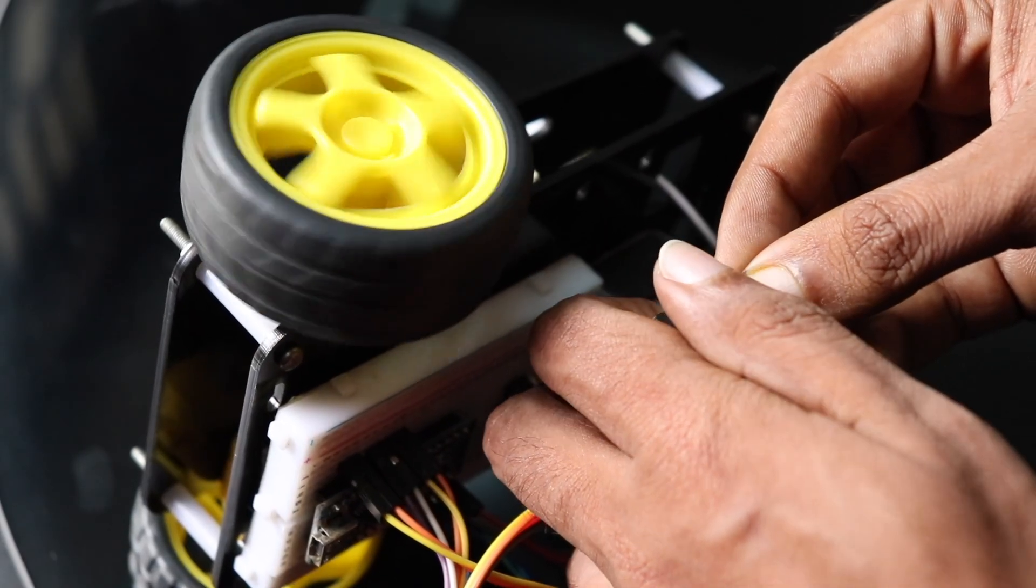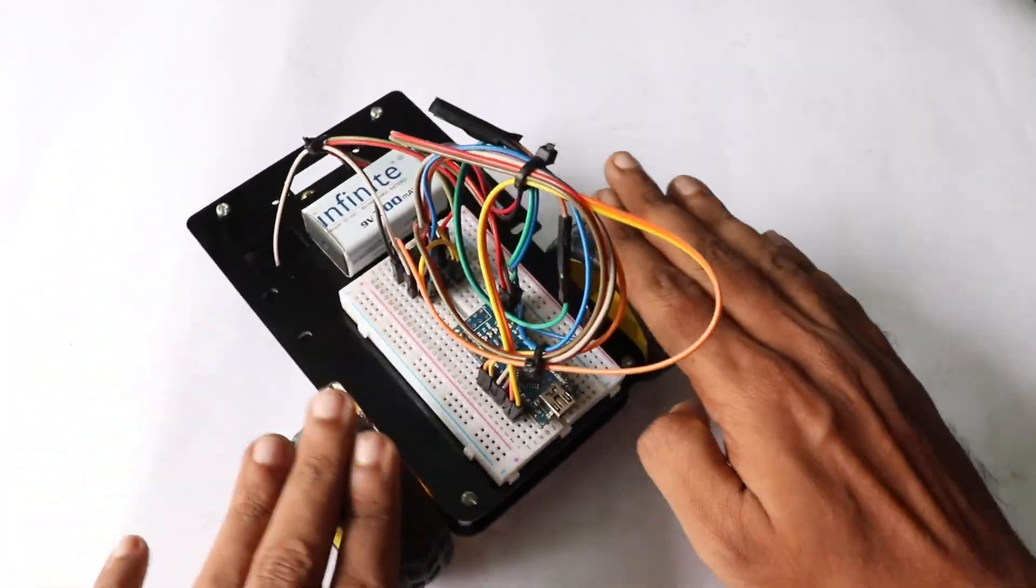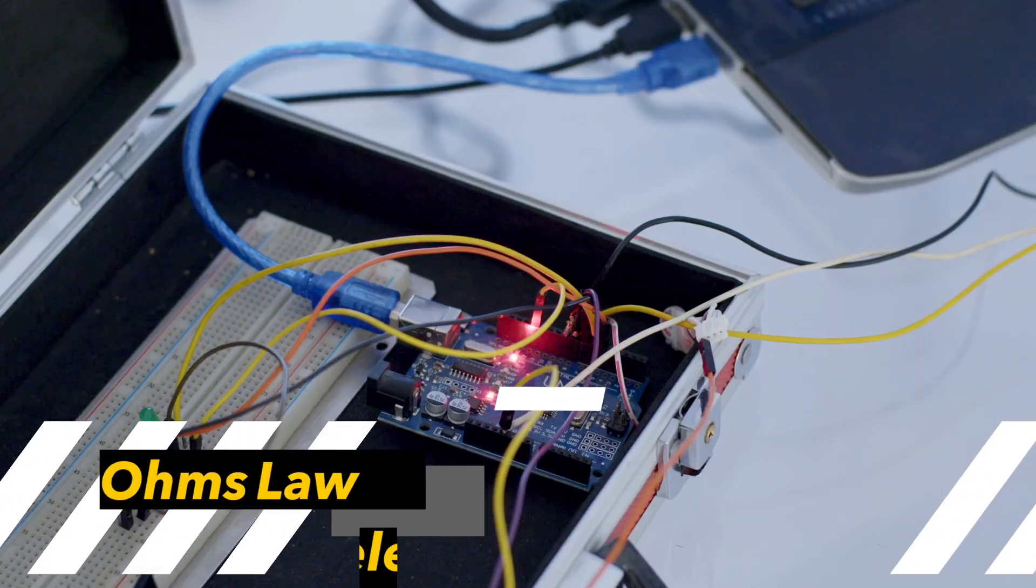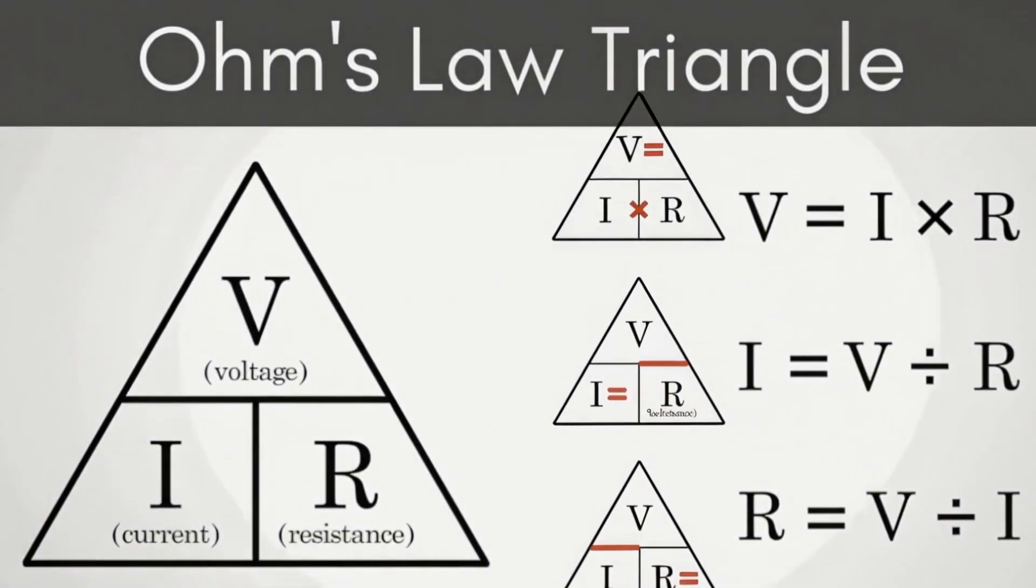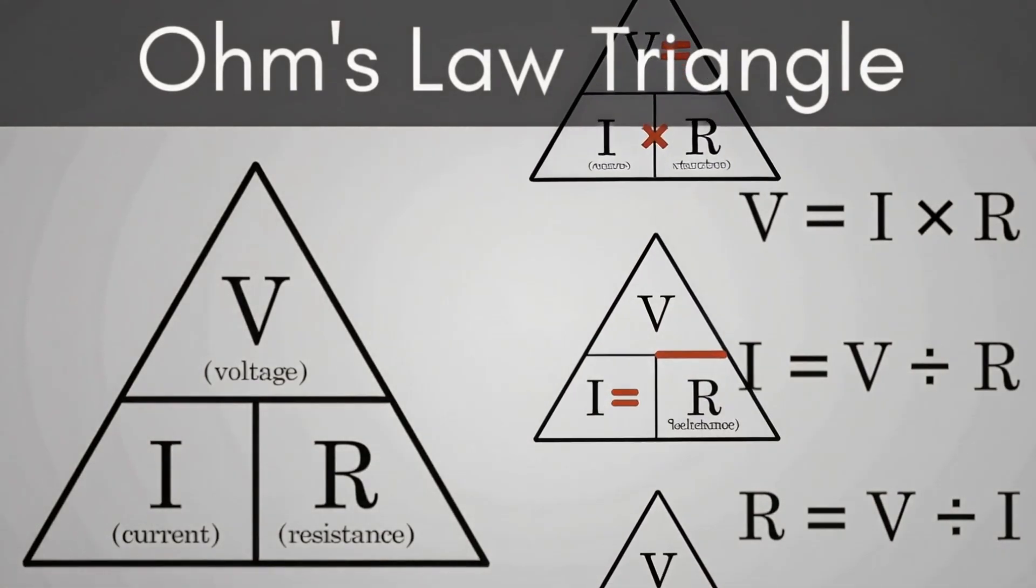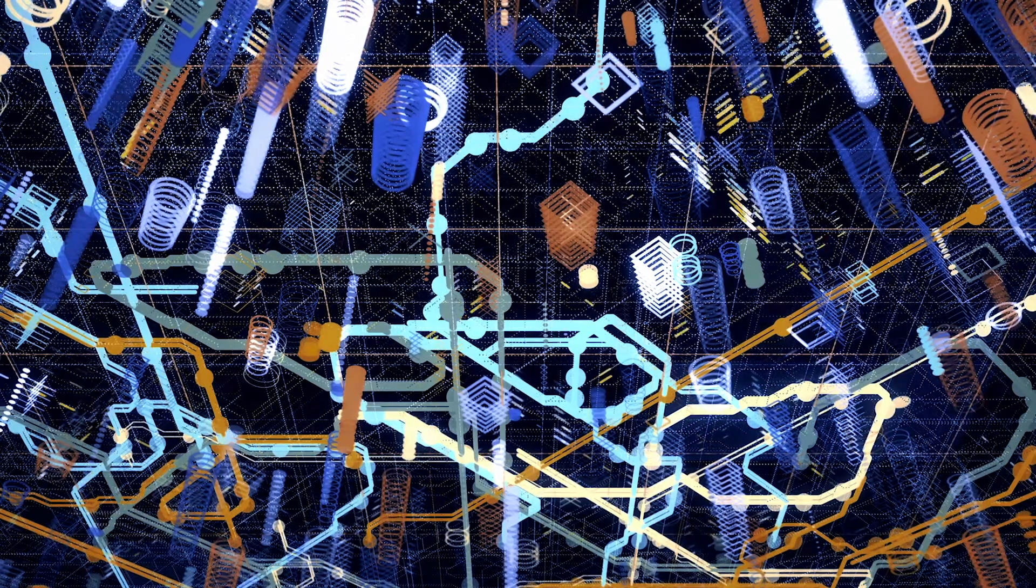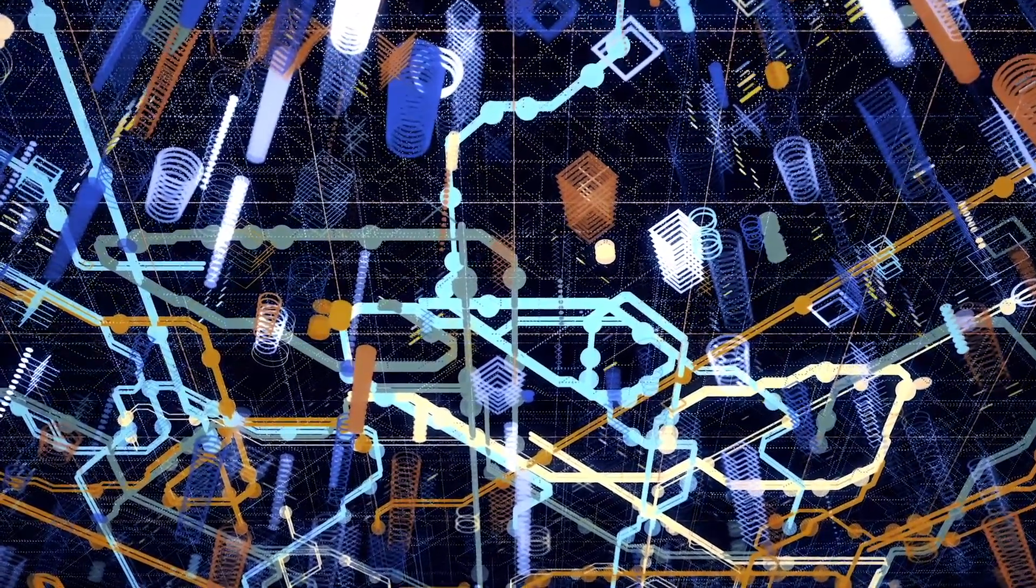Let's take a look at the foundational pillars of electronics for robotics. First up, let's demystify Ohm's law. This fundamental principle, V equals IR, voltage equals current times resistance, is the bedrock of all circuit analysis.